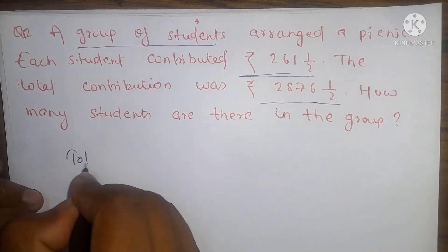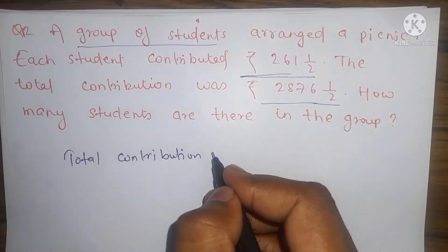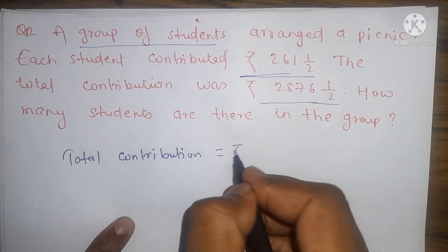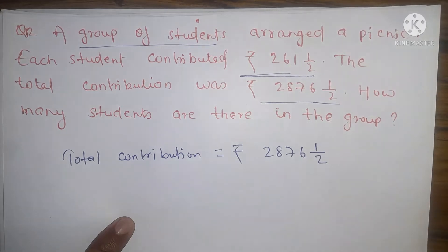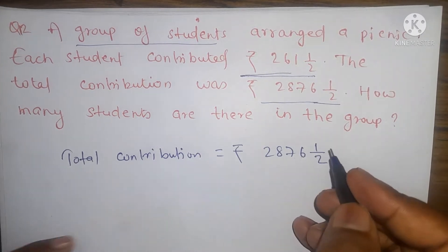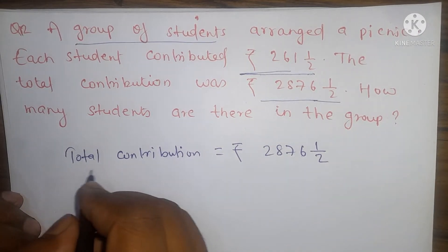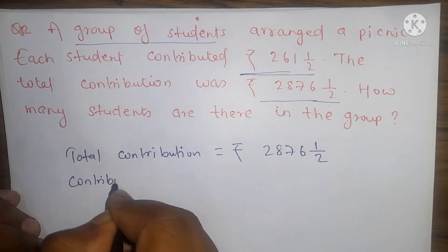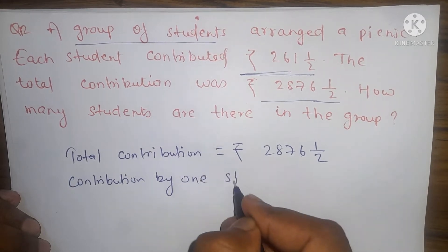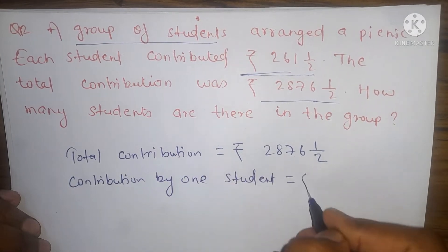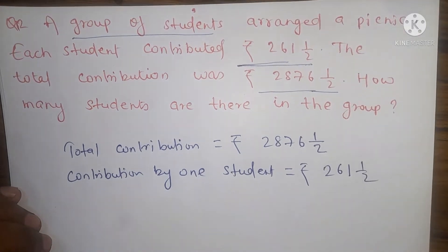Let's see. Total contribution - total contribution is 2876 upon 1 by 2. And contribution by one student - one student contributed 261 upon 1 by 2.